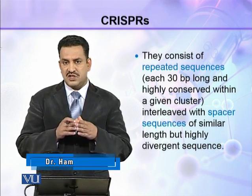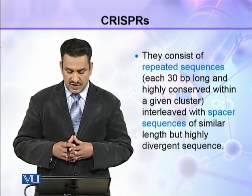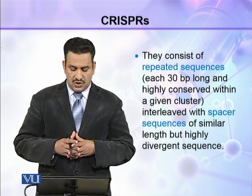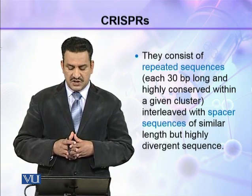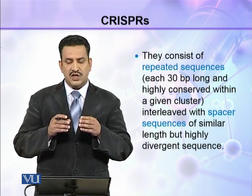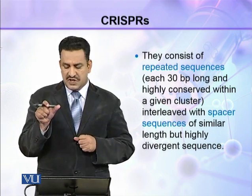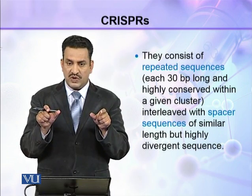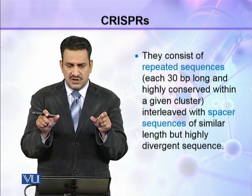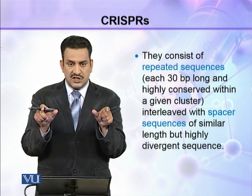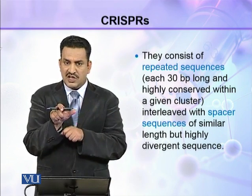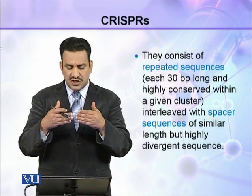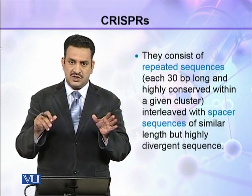Within a single cluster, the repeated sequences are highly conserved and interleaved with spacer sequences of similar length but highly divergent sequences. In a CRISPR, the repeated sequences are very conserved with similar sequence, and spacer sequences are interspersed between them.